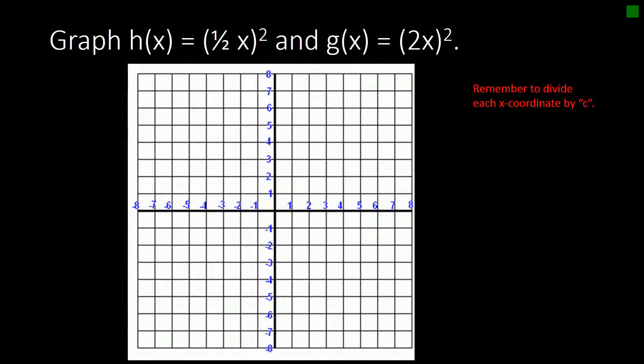So let's graph here. Remember that we divide each x coordinate by c. So again, we're looking at x squared. So I'm going to just draw x squared. And I'm going to use points 0, 0, 2, 4, and negative 2, 4. And so this is the graph of just plain old f of x equals x squared.